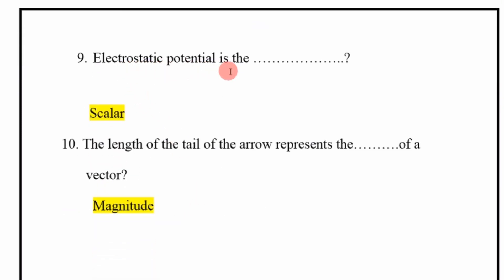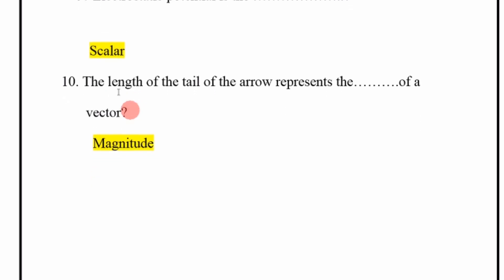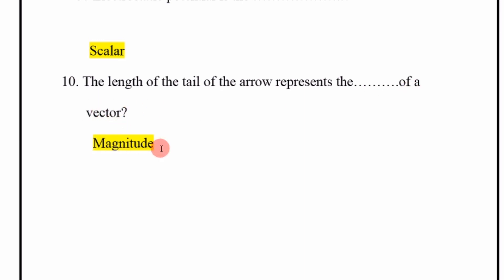Electrostatic potential is a scalar quantity. The length of the tail of the arrow represents the magnitude of a vector.